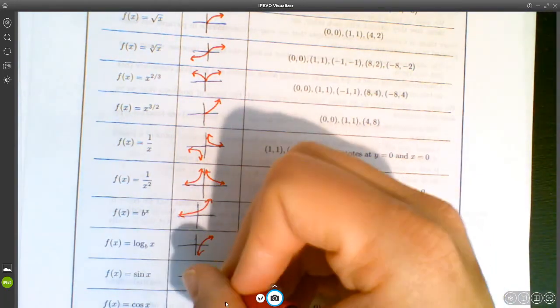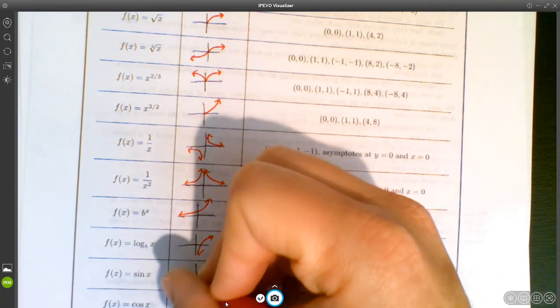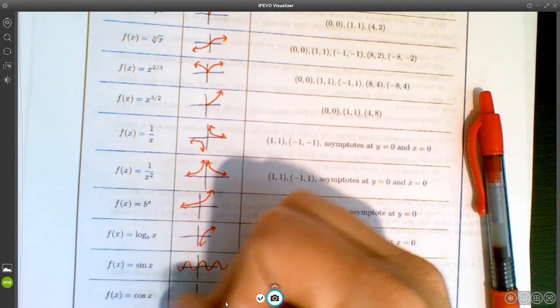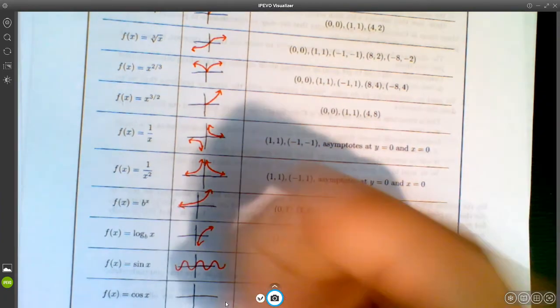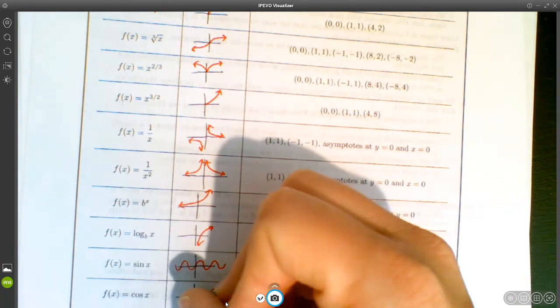Sine looks like this. Cosine looks the same as sine, except it starts at 1 instead of at 0, so it looks kind of like this.